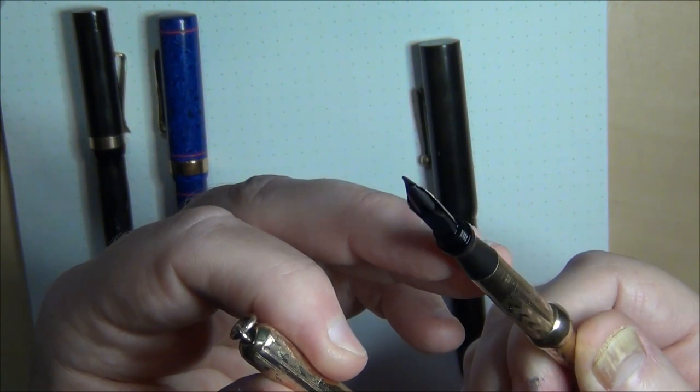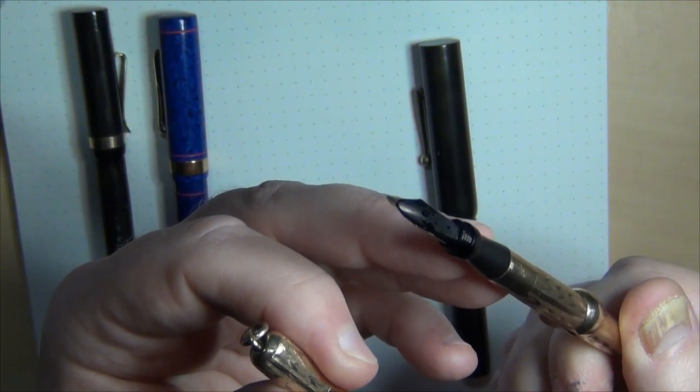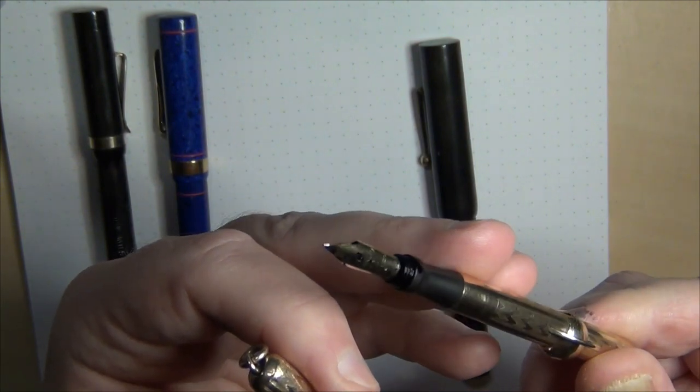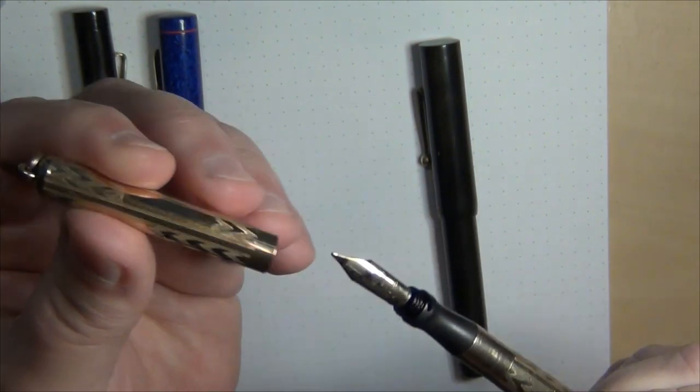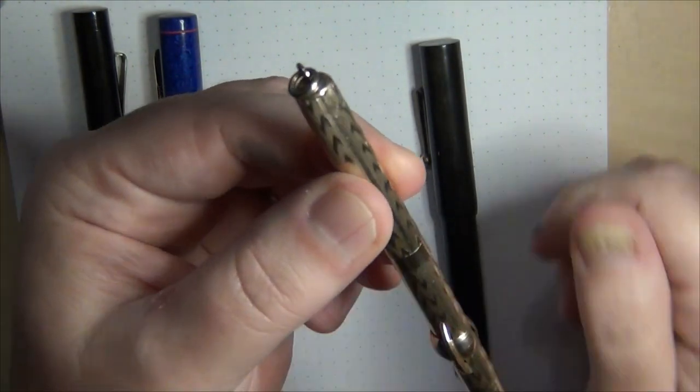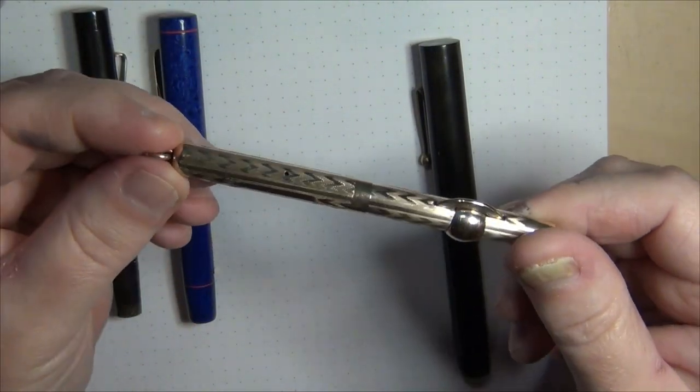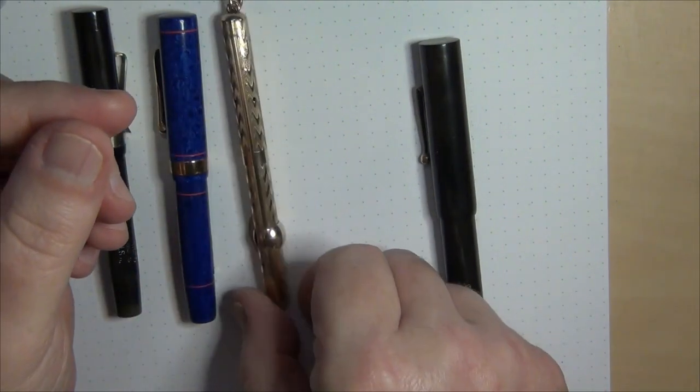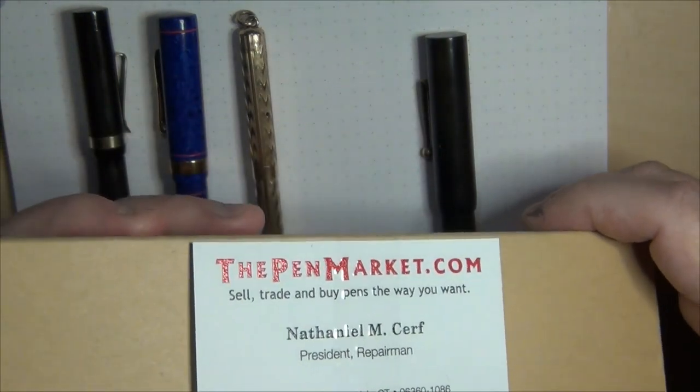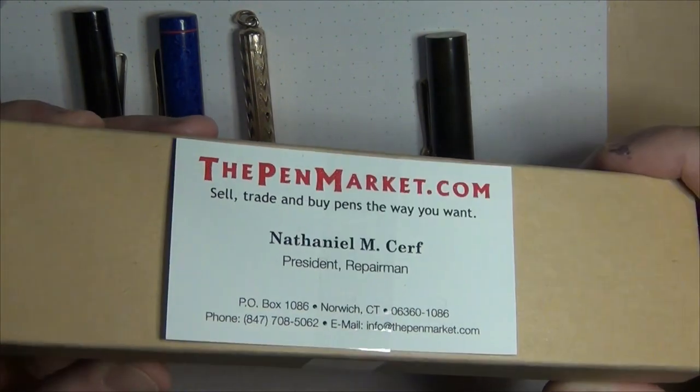Here's a little number two Conklin nib on it. It did seem to me that that nib and that feed sure stuck out an awful long way, but it also seems the way that shape of that feed, it may be about right. But it sure is a long-looking nib and feed on that thing. You've got the little screw-on cap onto this tiny little crescent filler. I thought that was kind of cute, it was a good-looking little pen so I went ahead and picked that up. I got this one from The Pen Market.